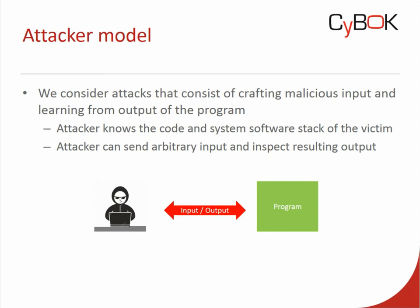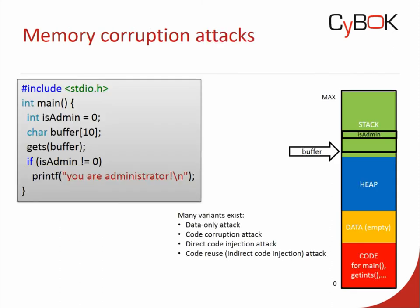So what can such an attacker do? If the victim program has one of these memory management vulnerabilities, the attacker can do very powerful things. I want to show two examples of things that can go wrong. The first is a memory corruption attack. In the toy code here, we see a variable called isAdmin — if this variable is non-zero, the program gets more functionality, things only an administrator can do. The program has allocated a buffer of 10 characters to receive input from the user. The gets function reads characters from standard input until a newline and stores them in the buffer.